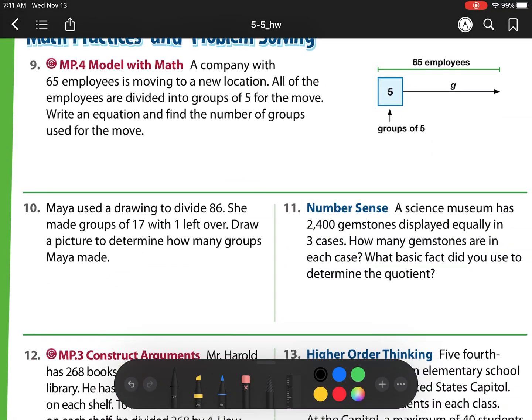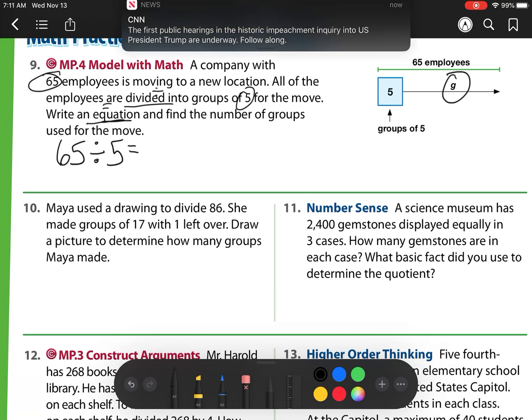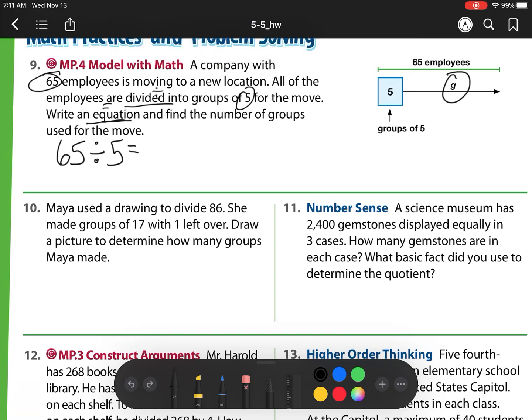Starting with number 9, we have a model. A company with 65 employees, so I'm circling my number, is moving to a new location. All the employees are divided, so I'm underlining and then putting my math operation into 5 groups for the move. Write an equation. So what do I need to do? I need to have something with that equal sign and find the number of groups used for the move. So what I have here is I have 65, and I'm breaking it up into groups of 5. So there's my equation. If I want to use their variable g, I can put it there. That g, remember, that is just like that question mark, only it's called a variable.